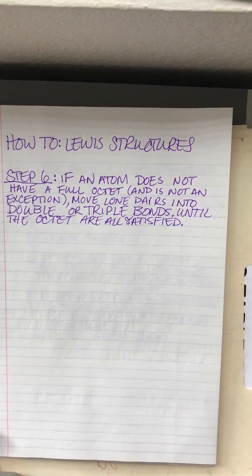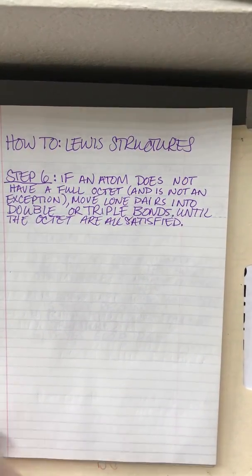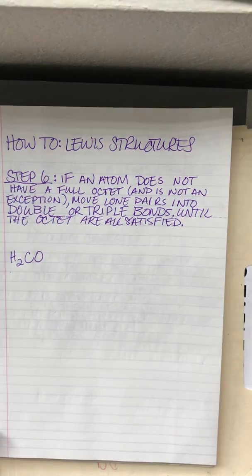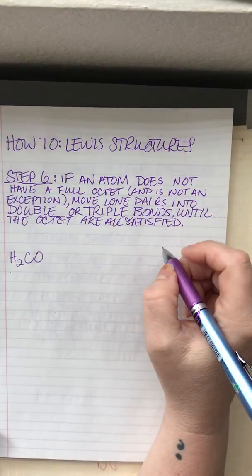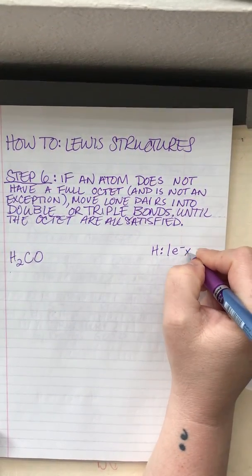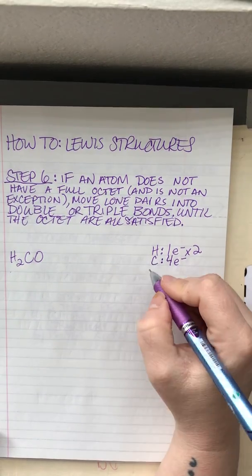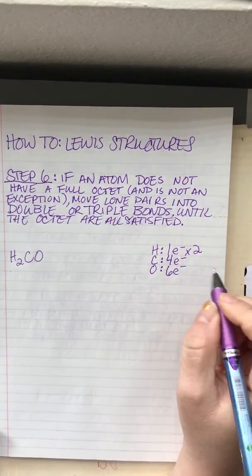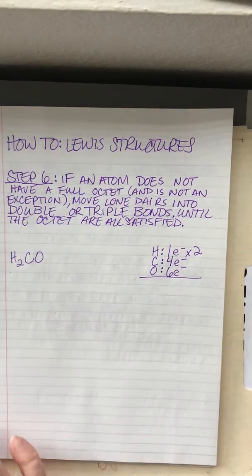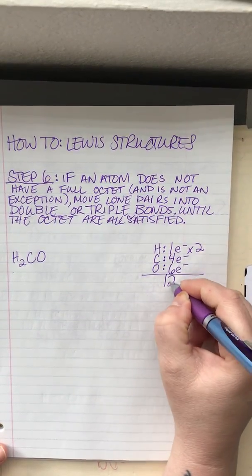Let's look at an example of an atom that does not have a full octet and is not an exception. Hydrogen has one valence electron and there are two of them. Carbon has four valence electrons, and oxygen has six valence electrons — all of that information comes from the periodic table. So we have twelve electrons total.